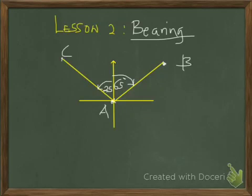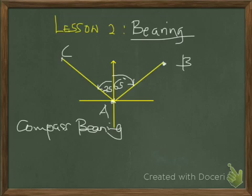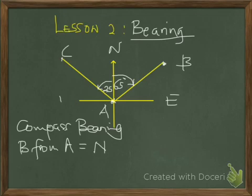The bearing of B from A is given as 65 degrees — that is, the angle between the magnetic north and the line connecting A and B is 65 degrees. The line connecting A and C from the magnetic north is 25 degrees clockwise. North is up, east is right, west is left, and south is down.